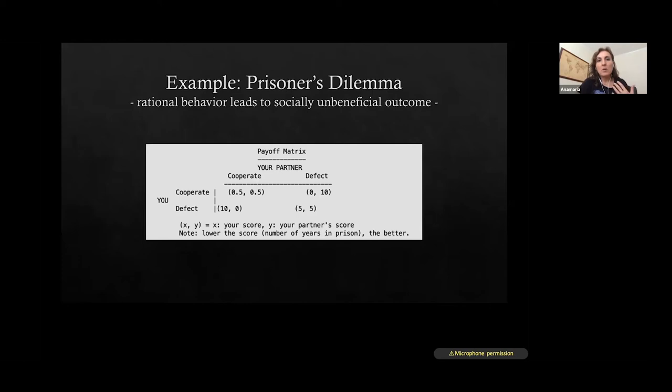The classic example of prisoner's dilemma shows us that rational behavior usually leads to socially unbeneficial outcome. Because usually in the prisoner's dilemma, both prisoners will settle for defection, for what we call the sub-Nash equilibrium instead of actually cooperating with each other.